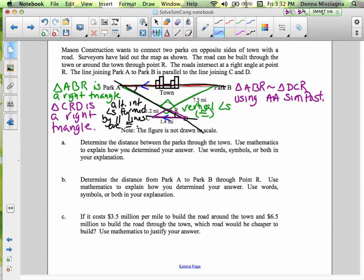All right, so we want to determine the distance between the parks through the town. All right, well, we have a right triangle. And so that means that we can use Pythagorean theorem. All right, we've got, so AR here is a leg of the triangle. And BR is a leg. And AB is the hypotenuse. All right, and we know Pythagorean theorem. That the leg squared plus the leg squared is the hypotenuse squared. So, AB squared equals AR squared plus BR squared.